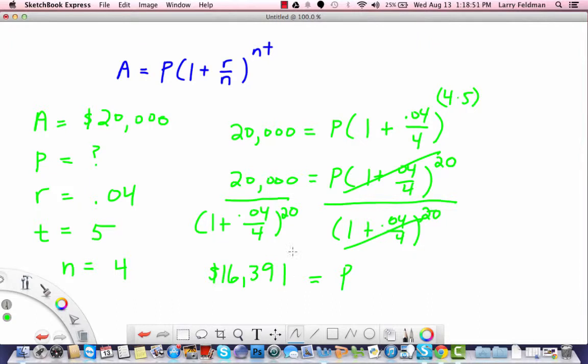So let's examine this a little bit more. A person needs to start saving today by putting $16,391 in an account that is compounded quarterly or every three months at an annual interest rate of 4% for five years so that they end up with $20,000 at the end so that he or she can buy the car. Okay, let's look at another example.